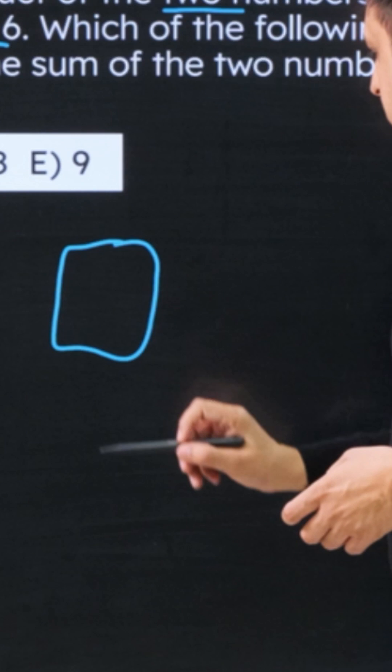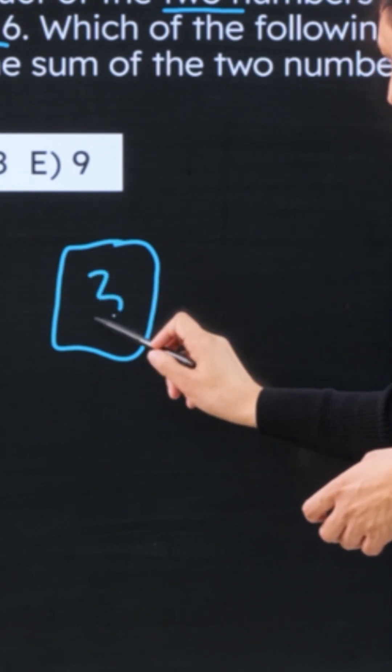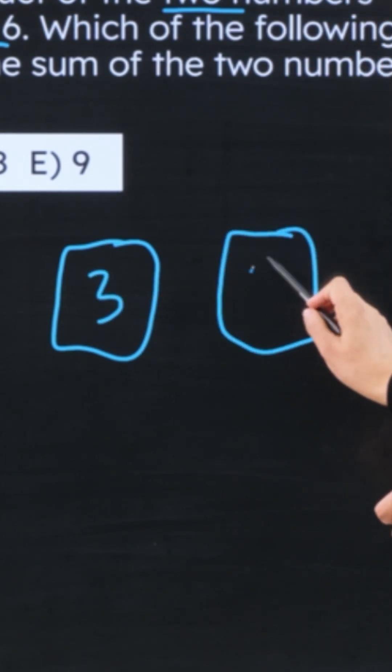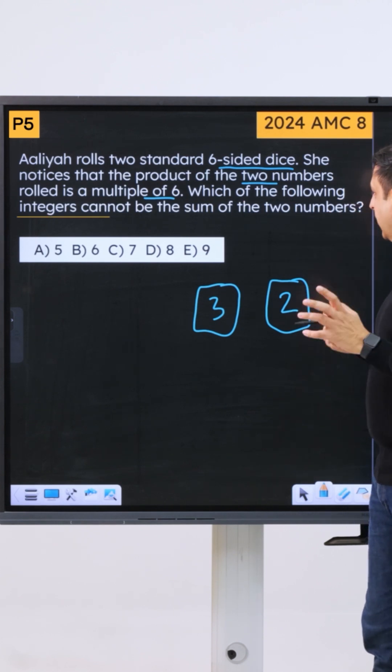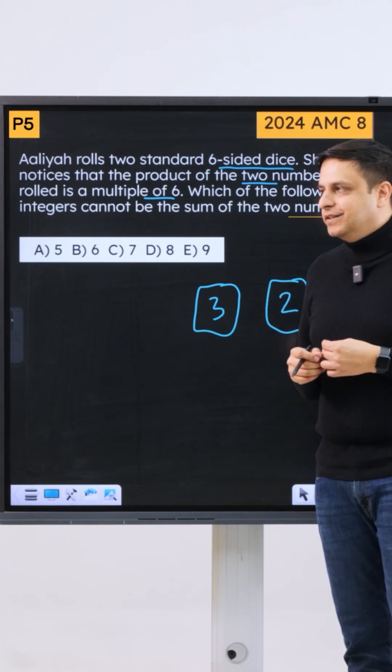So for example, if on one die she gets a three and on another die she gets a two, this product is a multiple of six. Which of the following integers cannot be the sum of the two numbers?